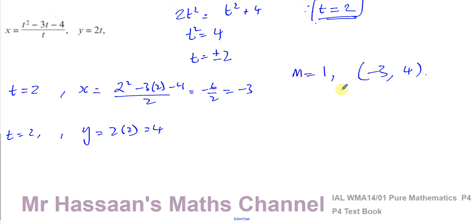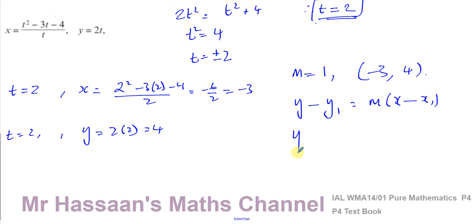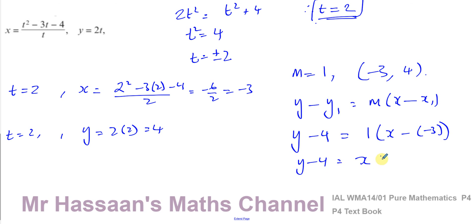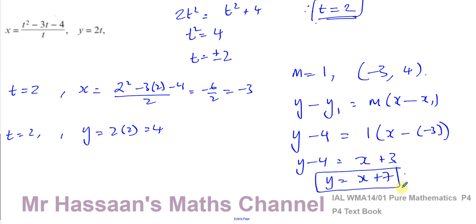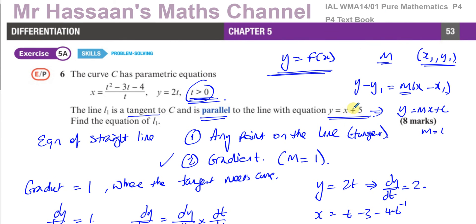Now we can find the equation of the tangent. Using y minus y1 equals m times x minus x1, with the point (minus 3, 4) and gradient 1: y minus 4 equals 1 times x plus 3, so y minus 4 equals x plus 3, giving y equals x plus 7.